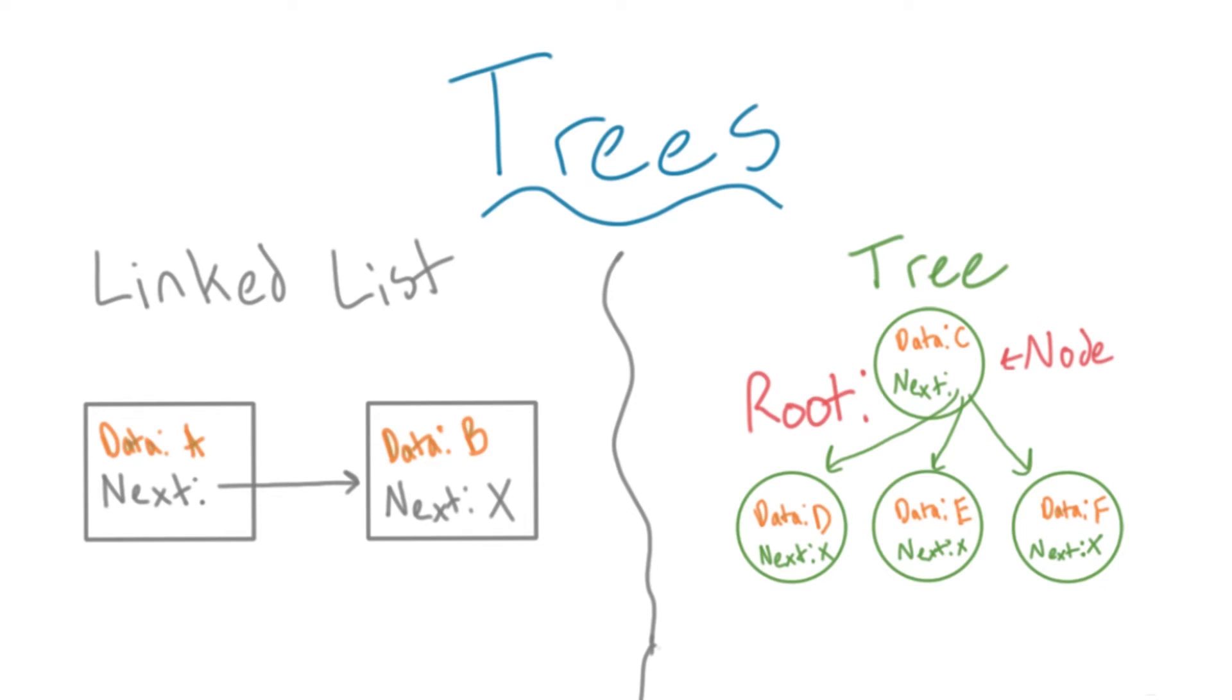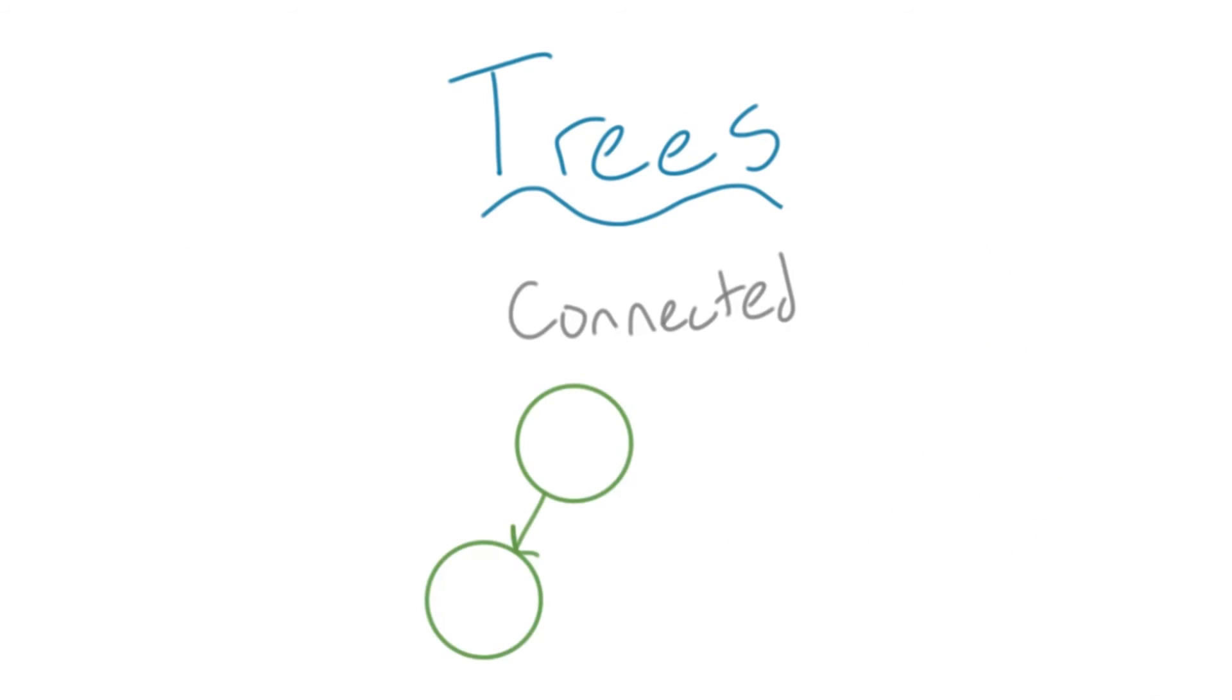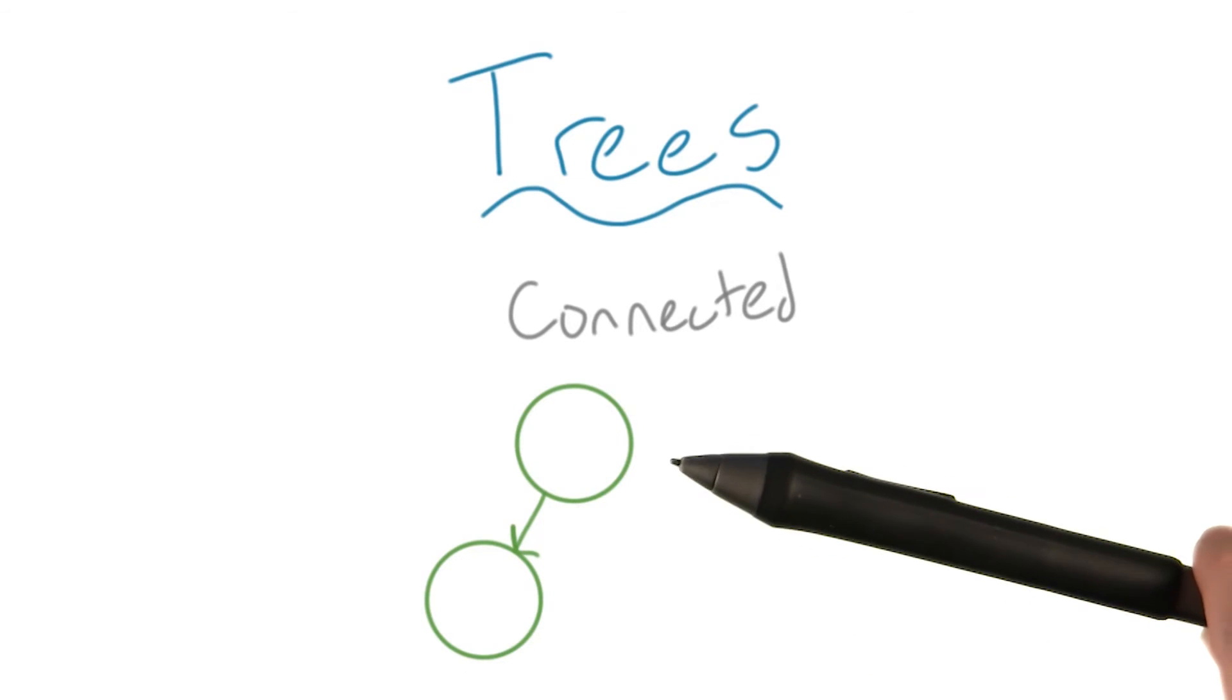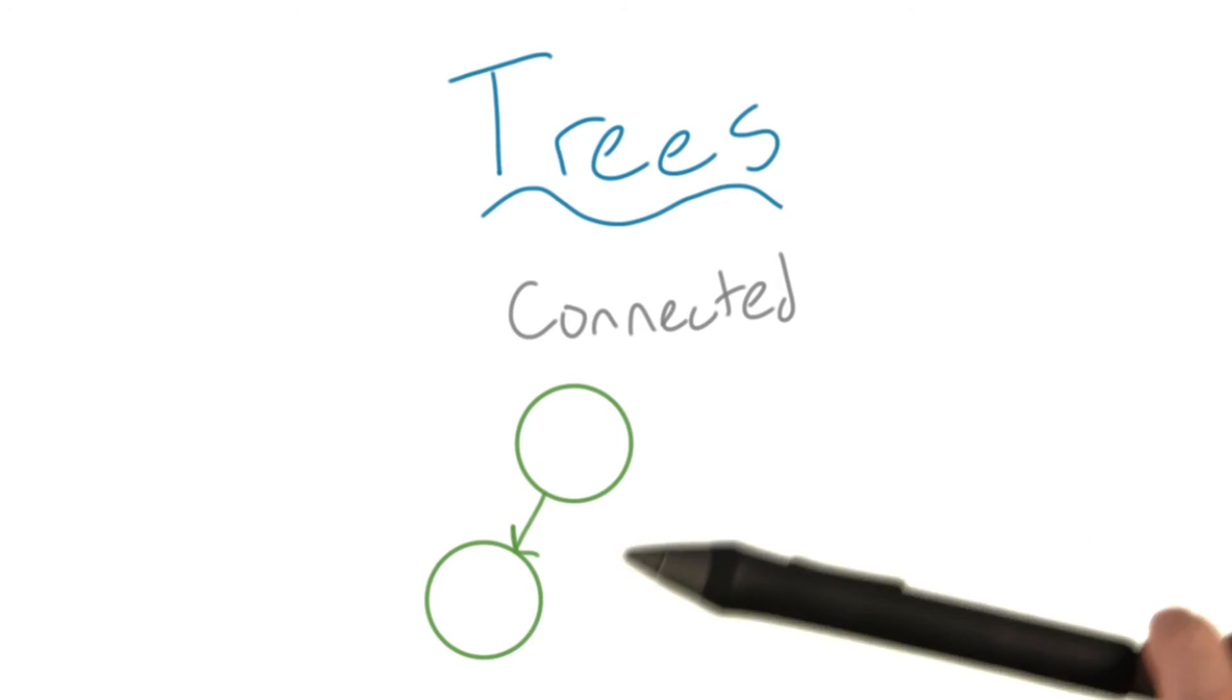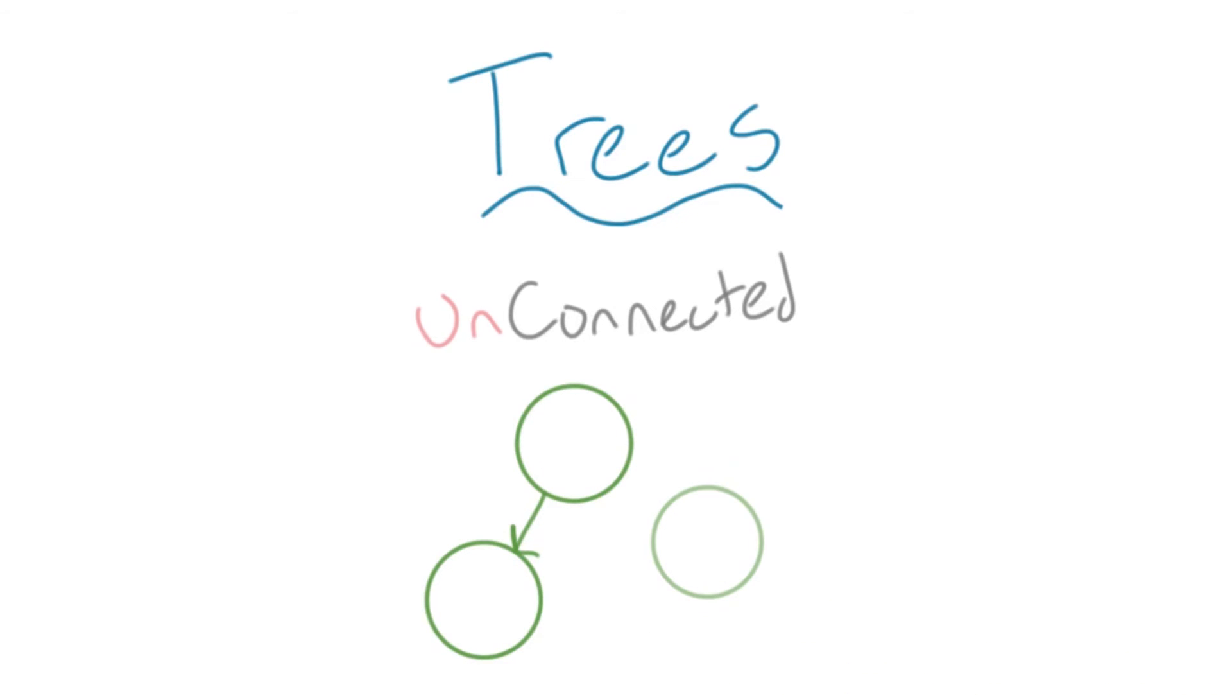Let's add a few more constraints on what we call a tree. First of all, a tree must be completely connected. That means, if you're starting from the root, there must be some way to reach every node in the tree. Here is an example of unconnected nodes. So, this definitely isn't a tree.